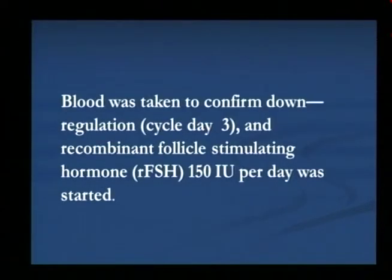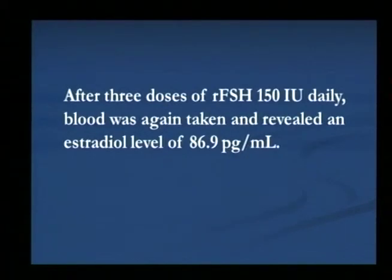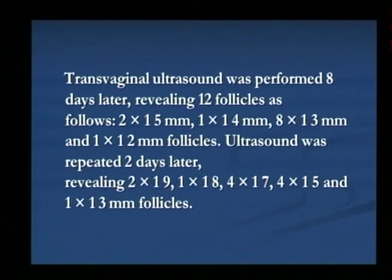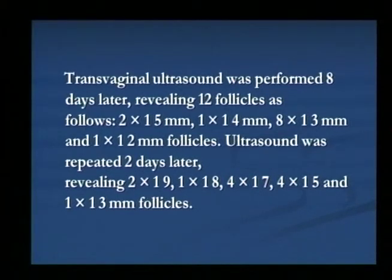Here is a short report of the case. The patient was followed with down-regulation and put on recombinant FSH 150 international units per day. After three doses, blood tests revealed an estradiol of about 86.9. The dose of recombinant FSH was increased to 200 IU for another two days and repeated blood tests revealed a satisfactory rise in estradiol. Ultrasound showed 12 follicles, and on repeat scan two days later there was growth to approximately 21.9, 18.1, 17 mm, 15 mm, and 13 mm follicles.